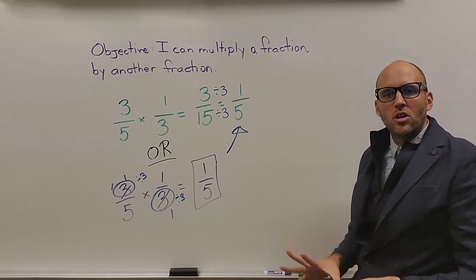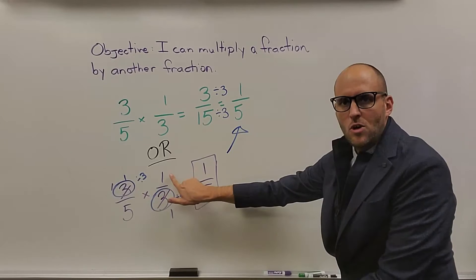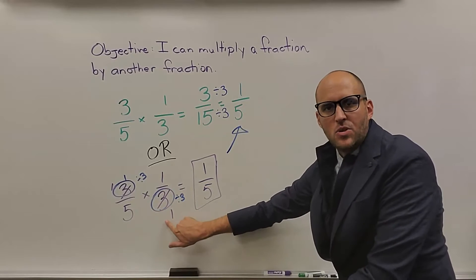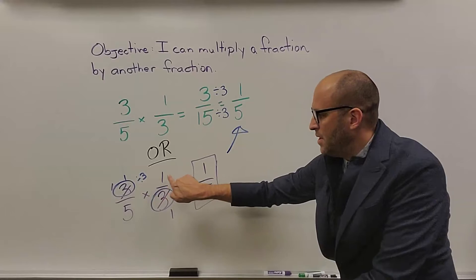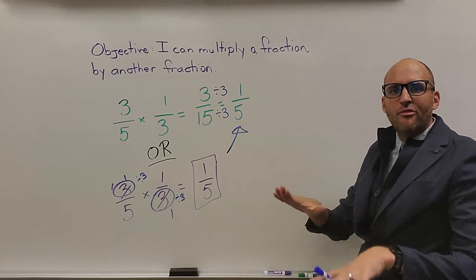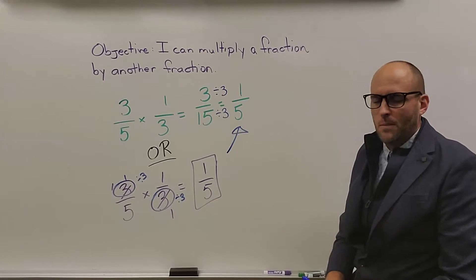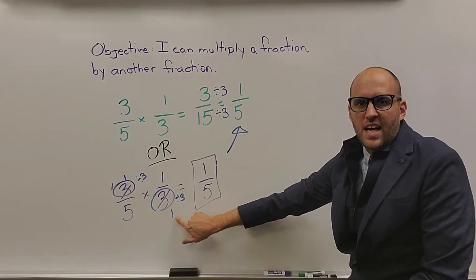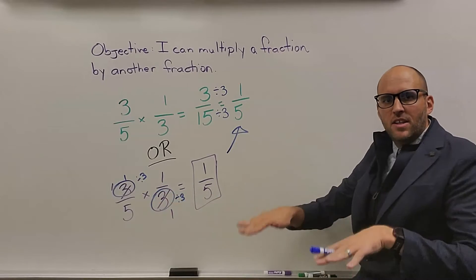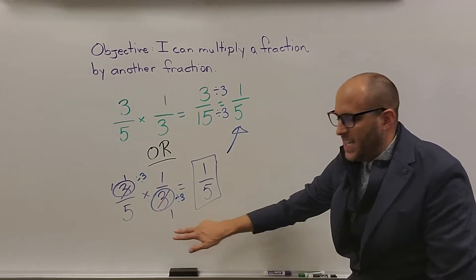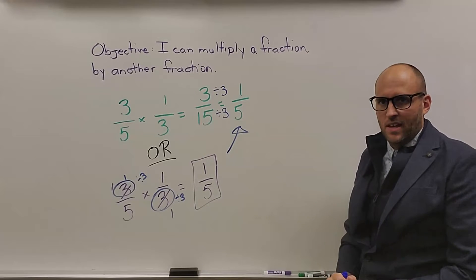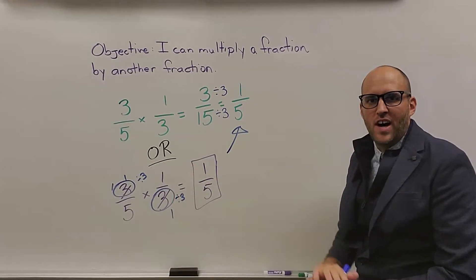You can only do this simplifying with a numerator and a denominator. You can't simplify two denominators, you can't simplify two numerators, because that throws off the balance of your problem. What you do to one side, you have to do to the other side, and you have to do it so it balances in a way. If you just change these, you're not actually changing anything, you're changing the value of something. So, you have to make sure you simplify in a correct way.